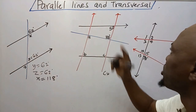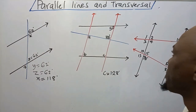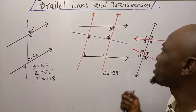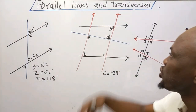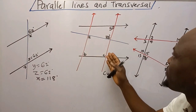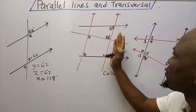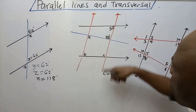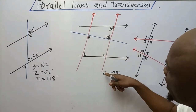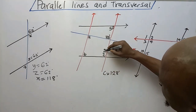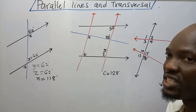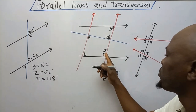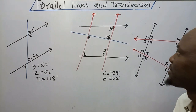So C will be equal to 180 minus 52 degrees, which gives me 128 degrees. The reason is consecutive interior angles — they are inside the parallel lines, on one side of the transversal, and add up to 180 degrees. Now considering this as another pair of parallel lines with a transversal: if this is 128 degrees, then B and 128 are consecutive interior angles, so B will be 180 minus 128, which gives me 52 degrees.